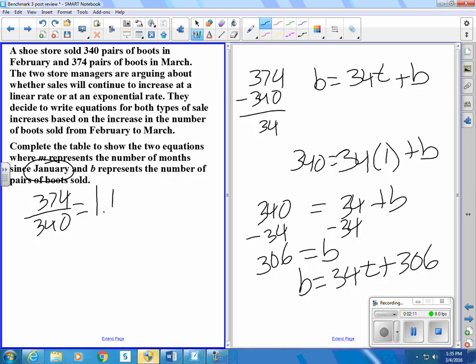And that equals 1.1, so it's increased by 10% from 340 to 374. And so my equation will be something like this: the number of boots is equal to the starting number of boots times 1.1 raised to the t for months, for time.